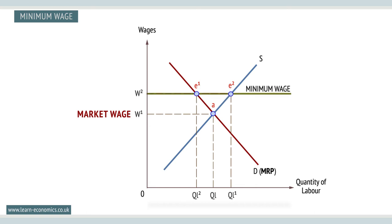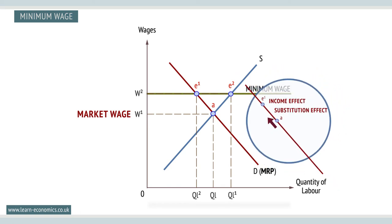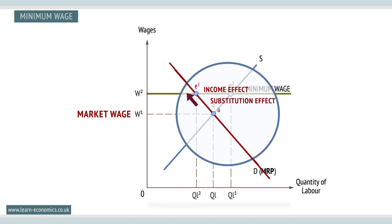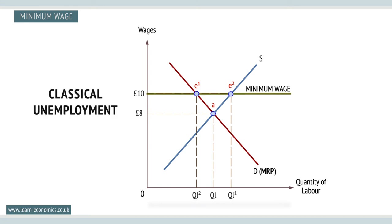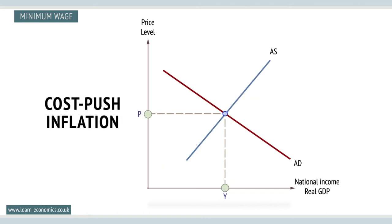The contraction of demand is the result of a combined income and substitution effect in response to the higher wage rate. For example, a minimum wage of £10 an hour would create a contraction in demand to E1, but supply would extend to E2, as more low-skilled workers are encouraged to look for work, creating classical unemployment of E1 to E2. In addition, critics argue that a higher minimum wage can cause price inflation as firms pass on the higher wages in higher prices.